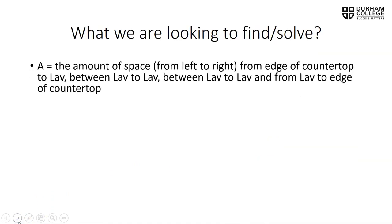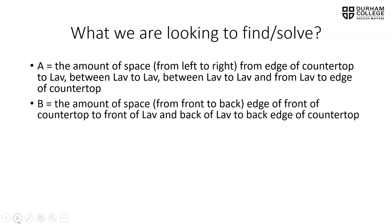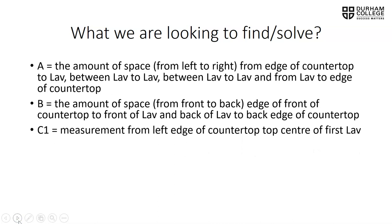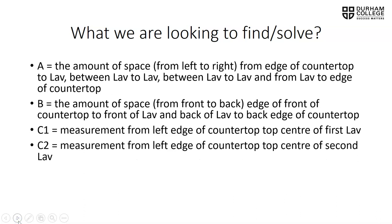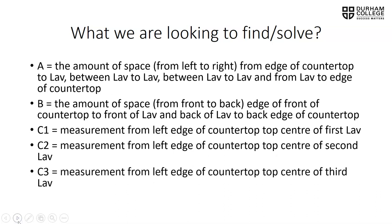So again, we're looking to solve A — the four equal spaces between each lav as well as between the lav and the edge of the countertop. We're solving B, which is the equal amount of space at the front from the front of the counter to the lav, and from the back of the lav to the back of the counter. We're finding C1 from the left edge of the countertop over to the center of the first lav, C2 from the left edge to the center of the second lav, and C3 from the left side of the counter over to the center of the third lavatory.